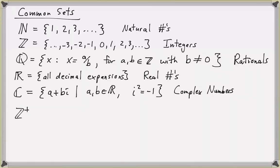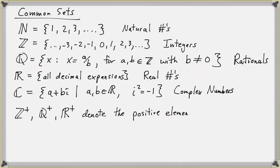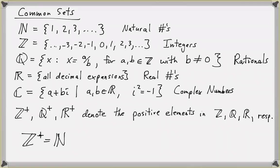We use an exponent of a plus sign to denote just the positive elements of these common sets. So Z-plus, Q-plus, and R-plus denote the positive integers, the positive rationals, and the positive real numbers, respectively. You can think of the positive integers as just the set of natural numbers, so these symbols would be used interchangeably.